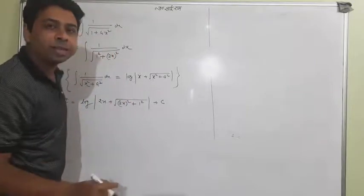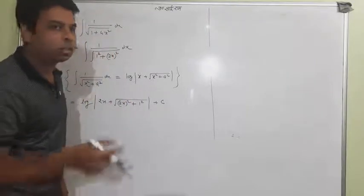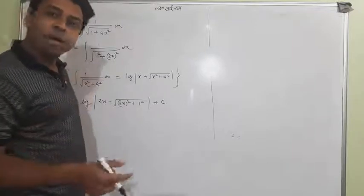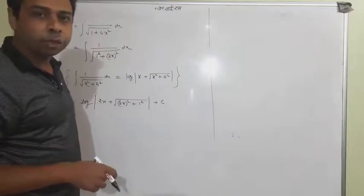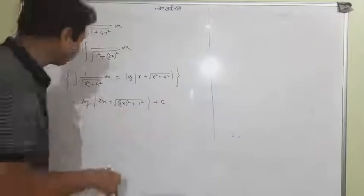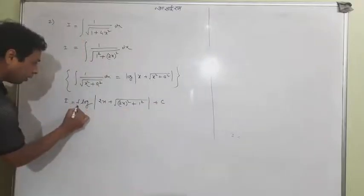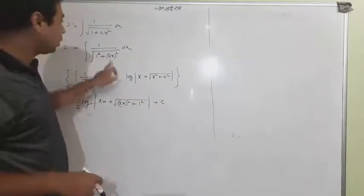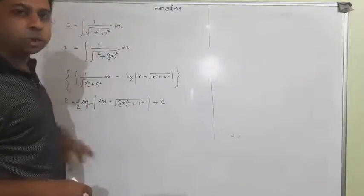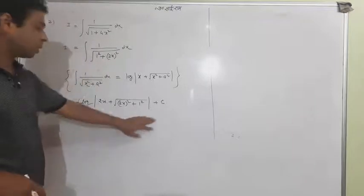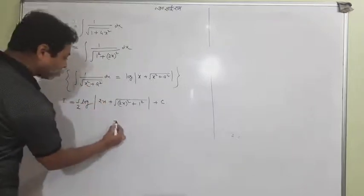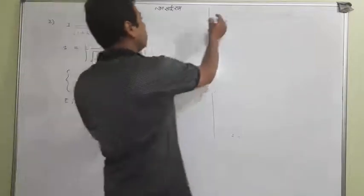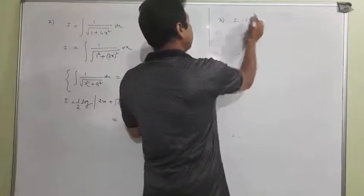But this is not enough — when the linear term of x has a coefficient, that coefficient comes into the denominator. The coefficient of x is 2, so we write 1 by 2 in front. The final answer is 1 by 2 times log(2x + root(4x² + 1)) plus C. Hope you got it — question number three is very similar.